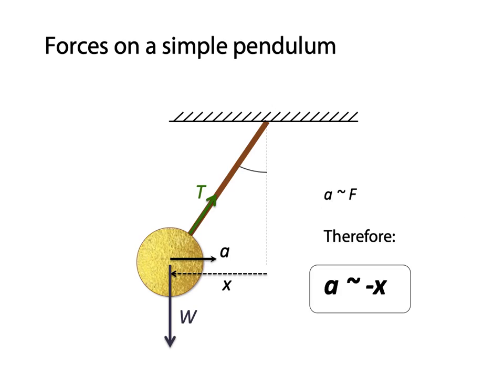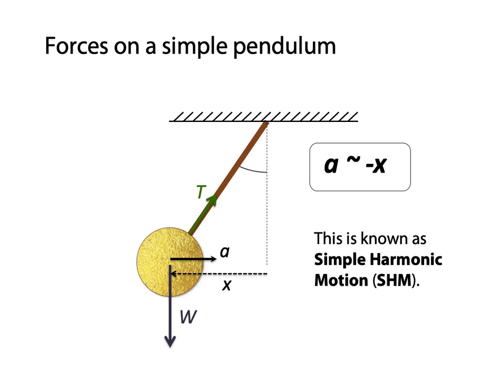Since force is proportional to acceleration, or acceleration to force, that means that acceleration is therefore also proportional to negative x. And in any type of oscillation you have where force is proportional to negative the displacement, or the acceleration is proportional to negative the displacement, that is simple harmonic motion.